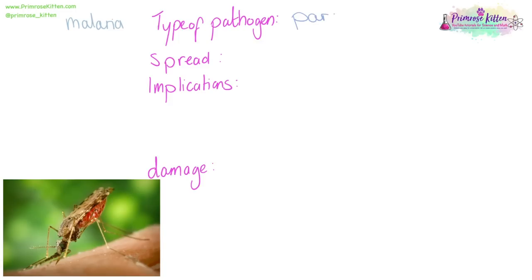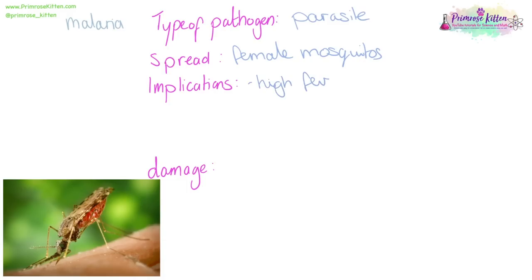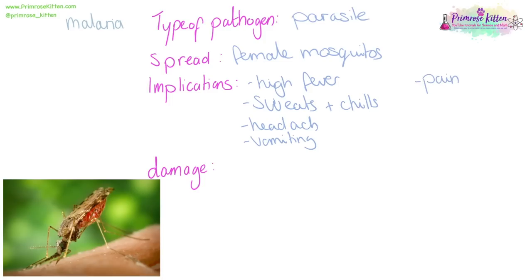Malaria is a parasite spread by female mosquitoes that drink your blood. Implications include high fever, sweats, chills, headache, vomiting, chest and muscle pains, and diarrhoea, which can be lethal in severe cases.